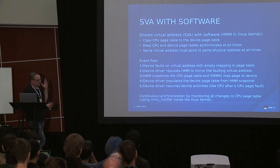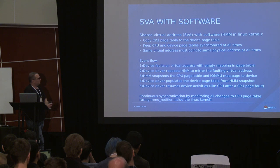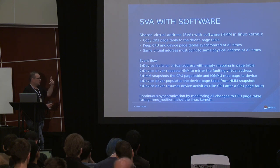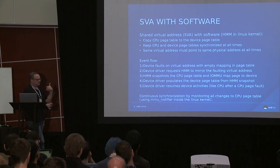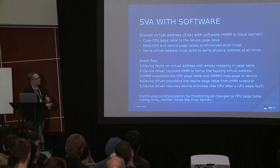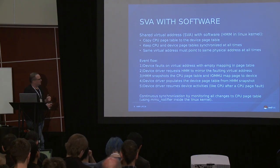The software event flow: the device takes a fault because it doesn't have an entry in its page table. It triggers an interrupt, which is taken by the device driver inside the kernel. The device driver requests HMM to mirror the faulting virtual address. HMM takes a snapshot of the CPU page table, maps the page inside the IOMMU so the device can directly access the right memory, and the device driver populates the device page table from the HMM snapshot. Then it resumes the device. It's exactly like a CPU page fault, except you're populating the device page table instead of the CPU page table.